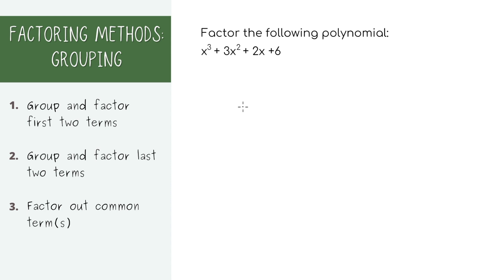When you encounter something with 4 terms, I usually go for the grouping method. For a first step, let's group the first two terms and see what you can factor out. So basically find the GCF of the first two terms.